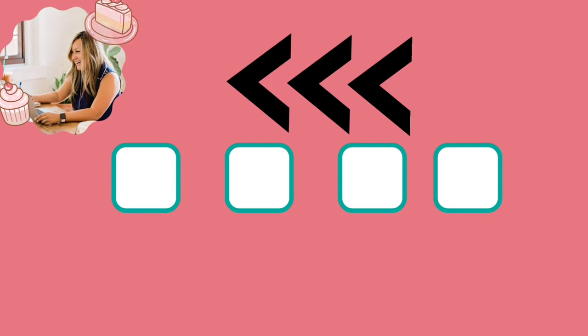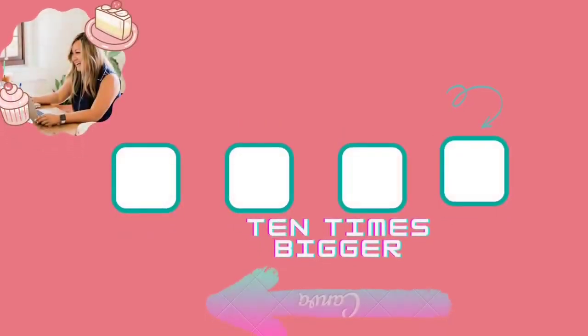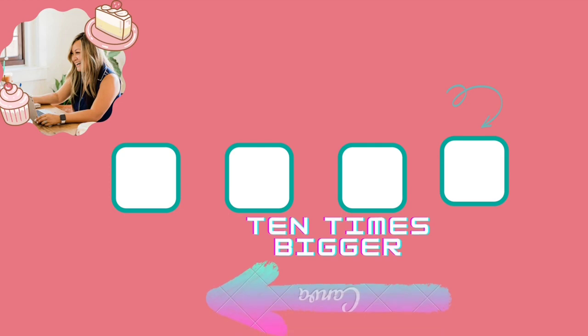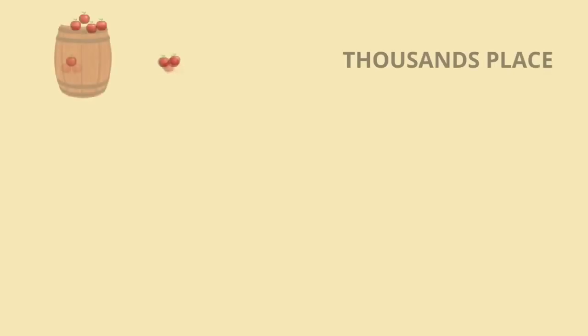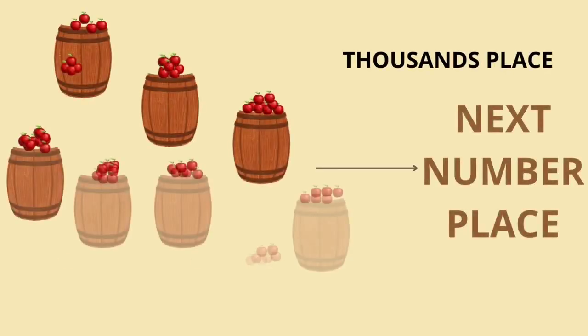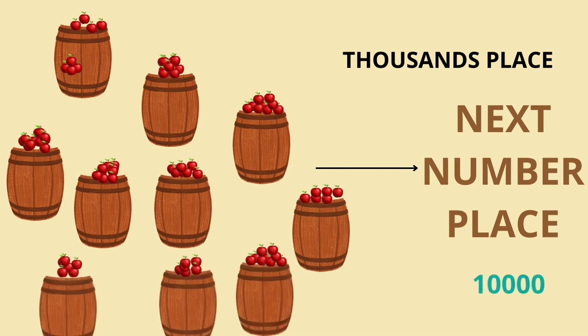This pattern helps us see that the next number place will count groups of 10 times 100, which is 1,000 — that's why it's called the thousands place. The next place will count groups 10 times bigger than that: the ten thousands place. Number places keep going: next is the hundred thousands place, then the millions place, then ten millions, hundred millions, then billions, and so on.